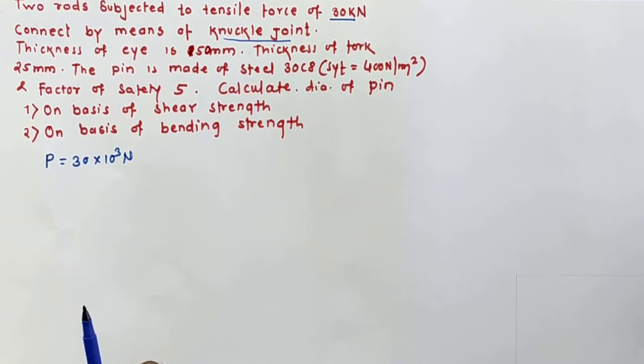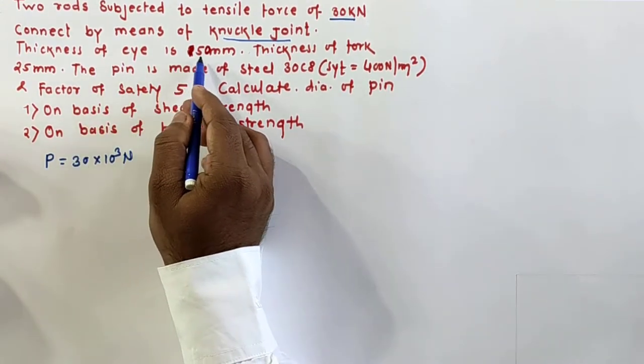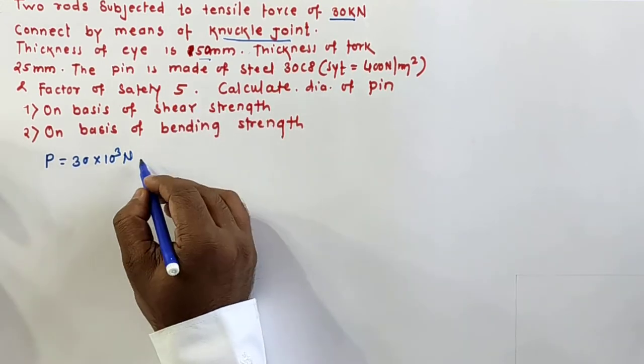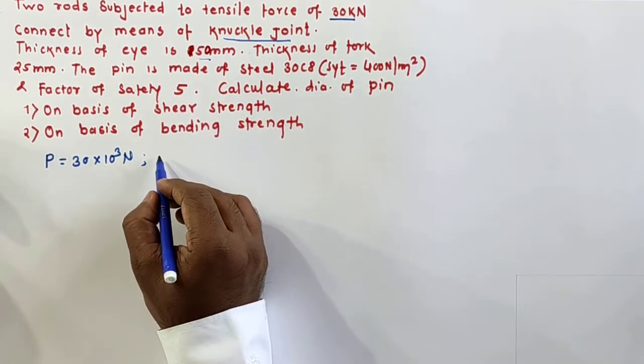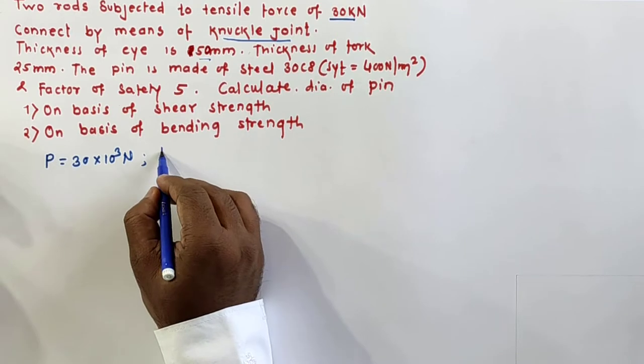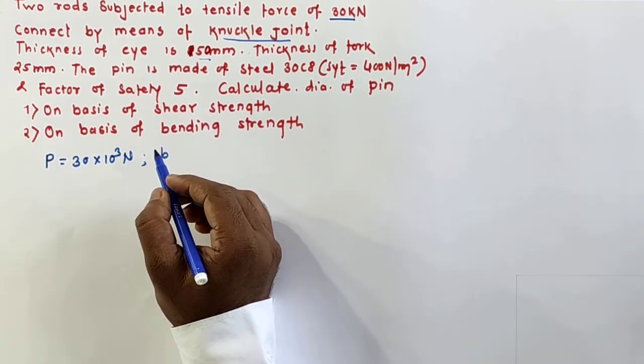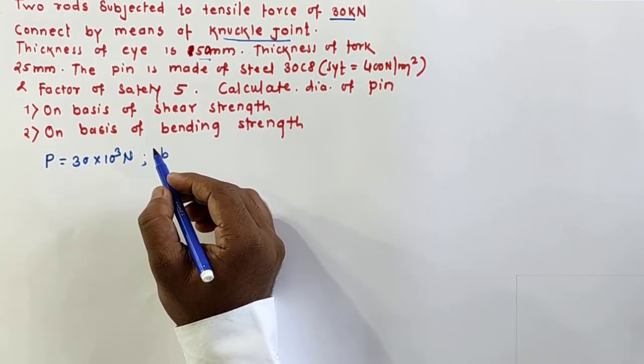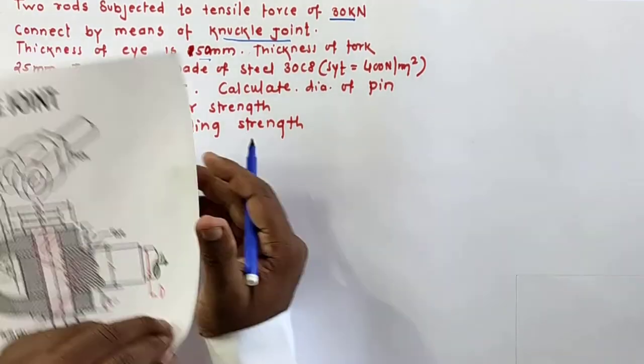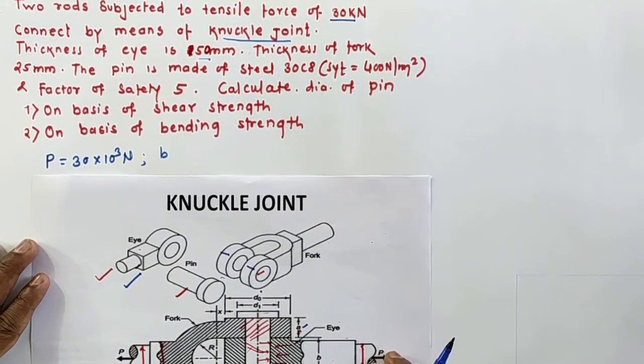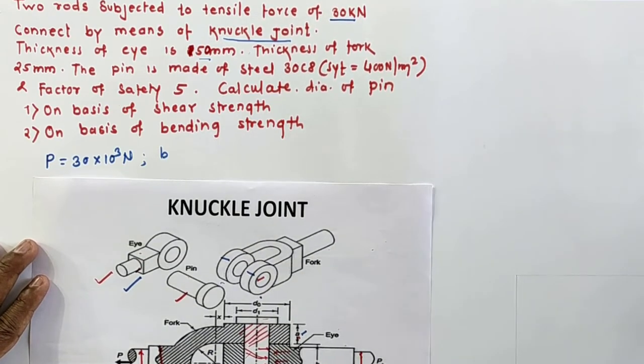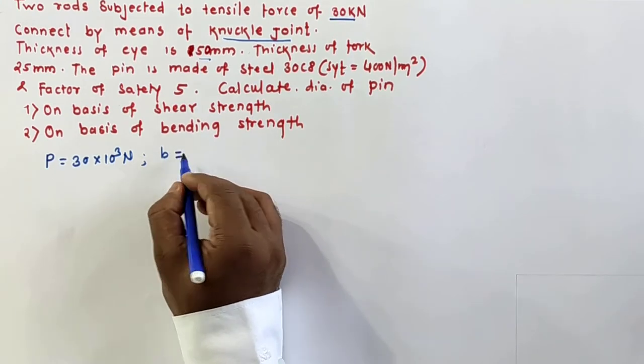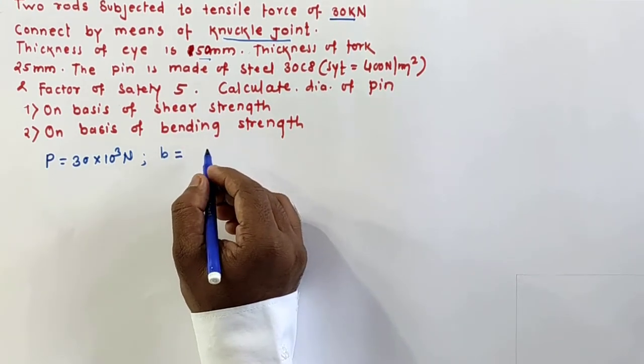We are going to solve by knuckle joint. Thickness of eye is 50 mm, so thickness of eye as per the diagram, I'll show - this is eye section, it is having B as width and A is the width of fork. So thickness of eye dimension B, so I'll write B equals 50 mm.